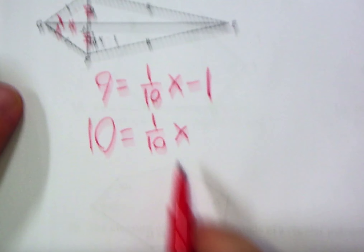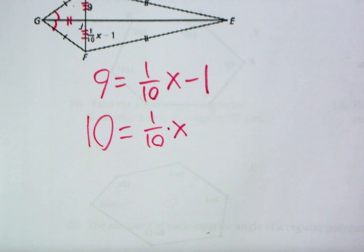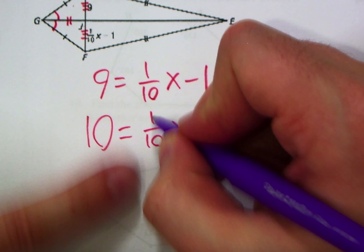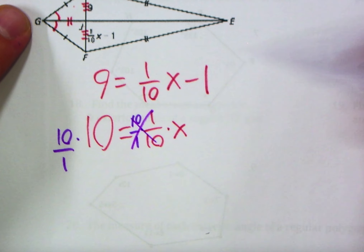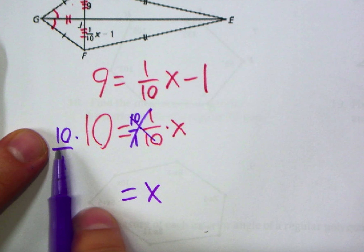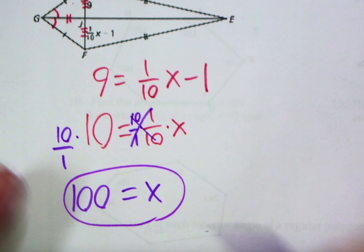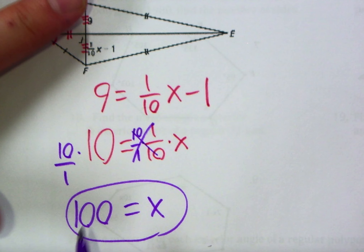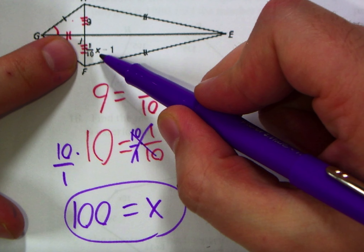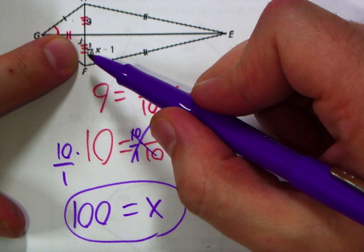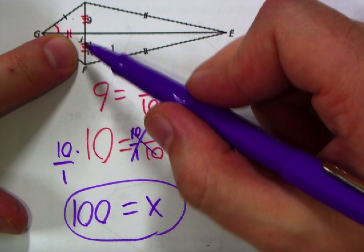To solve 10 = (1/10)x, we multiply both sides by the reciprocal of 1/10, which is 10. So 10 × 10 = 100, giving x = 100. That might seem large, but remember the variable is not the segment length. Check: (1/10)(100) − 1 = 10 − 1 = 9. We get the same distance across, confirming the answer.